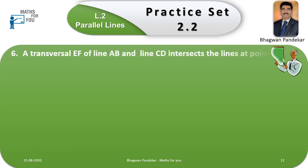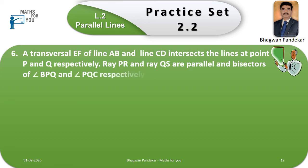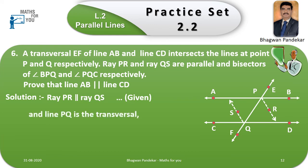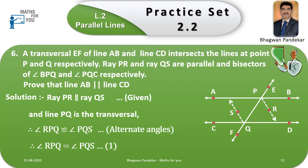Example number six: A transversal EF of line AB and line CD intersects the lines at points P and Q respectively. Ray PR and ray QS are parallel and bisectors of angle BPQ and angle PQC respectively. Prove that line AB is parallel to line CD. Solution: Ray PR is parallel to ray QS — given. Line PQ is the transversal. Therefore, angle RPQ ≅ angle PQS by alternate angles. Therefore, angle RPQ = angle PQS. This is equation one.